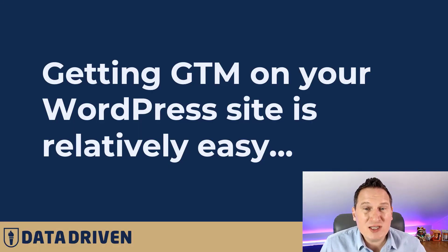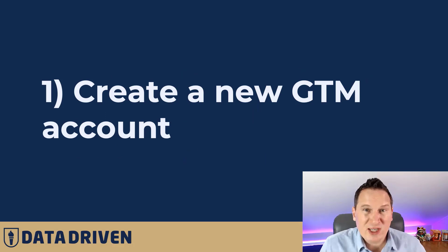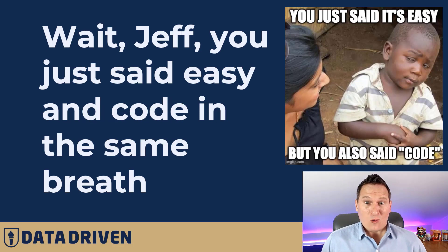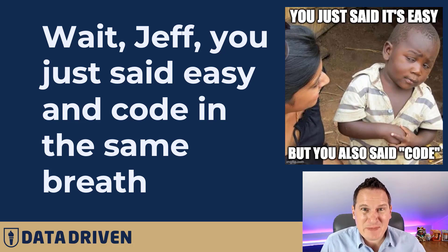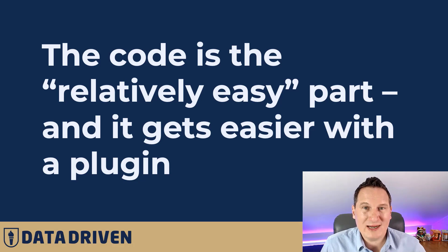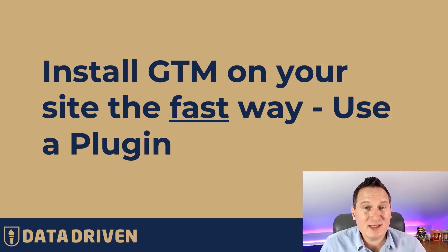So let's talk about the installation. Getting GTM on your WordPress website is relatively easy, and I'm going to show you how in five minutes or less. The first thing you need to do is create a GTM account. The second thing is add tracking code to your website. Getting the code on your site is relatively easy and enables you to do so much more with tracking and tags. And it's even easier when you use a plugin. So let's talk about the fastest way to get GTM on your site — that is, using a plugin.